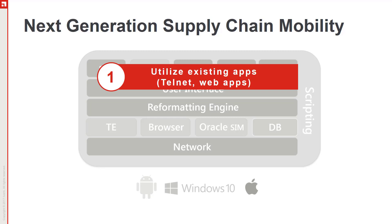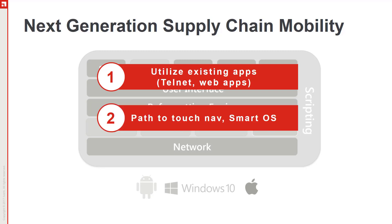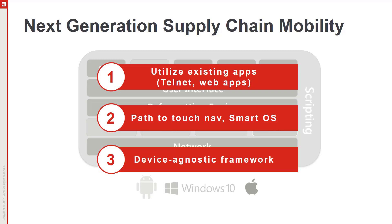into a framework that readies them for the next generation of operating systems such as Android, and incorporates design for the touchscreen interface these new devices offer. Velocity enables you to customize everything from on-screen keyboards to data capture to powerful scripting and much more. Velocity is easy to implement on the latest touchscreen devices from all leading rugged mobile computer manufacturers.